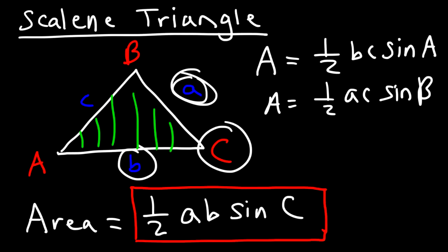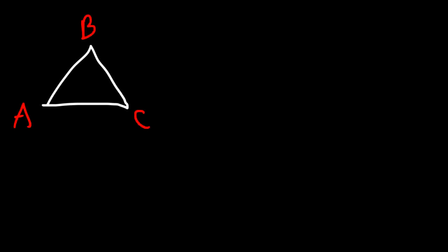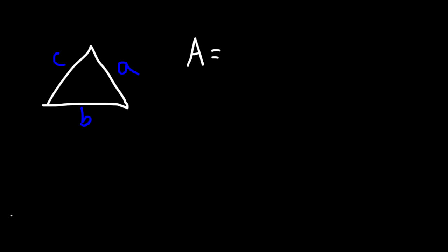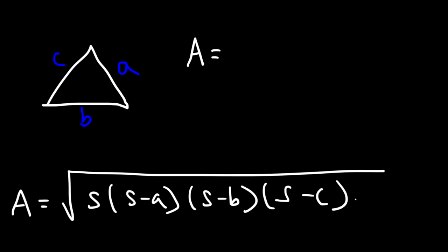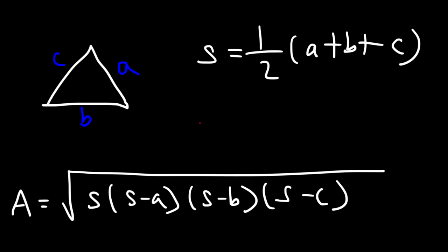Going back to the scalene triangle, there's another way to calculate the area when you don't know any of the angles — only the three sides. In that case, use Heron's formula: the area equals the square root of S times (S minus A) times (S minus B) times (S minus C), where S is one half of the perimeter, that is, one half of A plus B plus C. Find S first, then plug everything in.